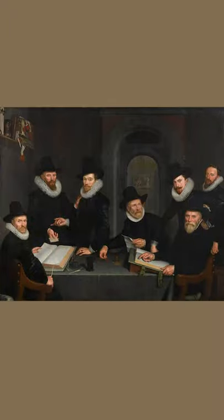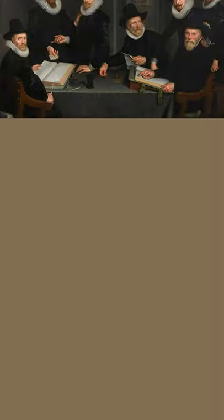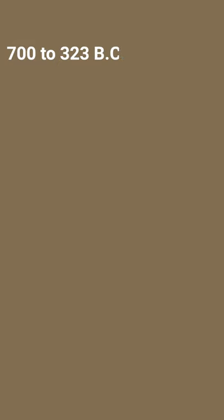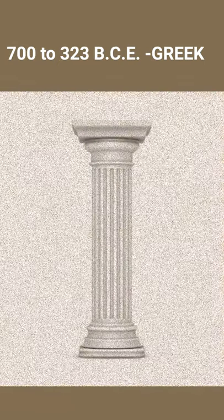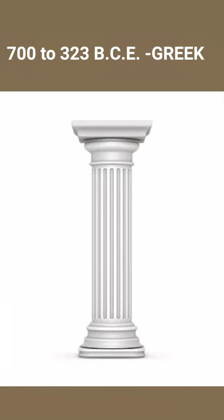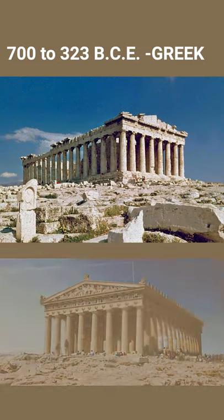Historians have described three classical periods. The Greek Period: the Doric column was first developed in Greece and it was used for great temples, including the Parthenon in Athens.